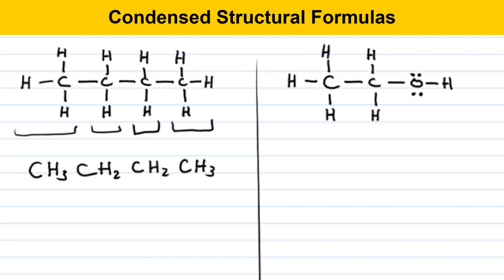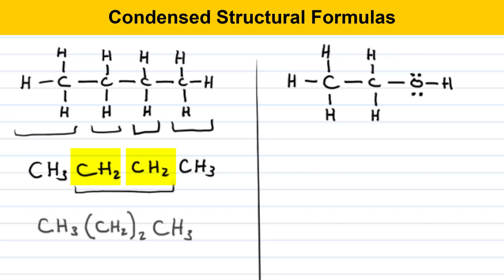In condensed structural formulas, groups that repeat can be represented by parentheses and a subscript number to indicate the number of repeating units. For example, in this molecule in the middle, there are two CH2 groups that repeat. So this could be represented by replacing the CH2CH2 with a CH2 in parentheses with a 2 around it to indicate the same thing. It just takes up less space.